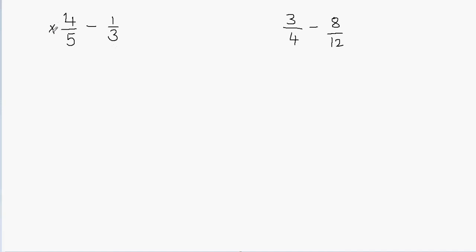What I'm going to do is multiply both fractions — I'll tell you why. I will multiply each fraction with the denominator of the other fraction. So I'll multiply this fraction by the denominator of the other fraction, which is 3, meaning I'll multiply it by 3 over 3. And I will multiply the other fraction by the denominator of the first fraction, which is 5. So you multiply each fraction by the other's denominator.